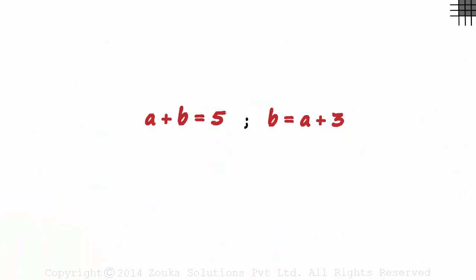These are the two equations we have and we need to find the value of A and B. One way in which we can do that is write one variable in terms of the other and then substitute it in the other equation. Here, fortunately we have B in terms of A. So we can substitute this value in place of B in the first equation.